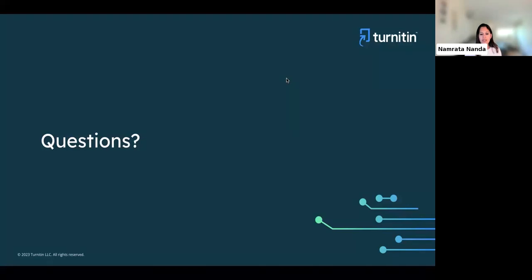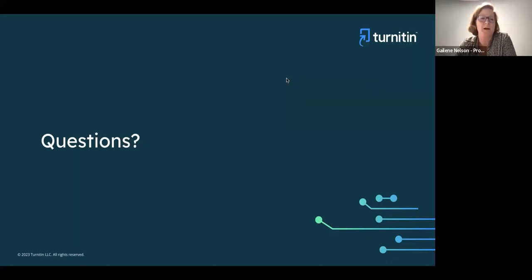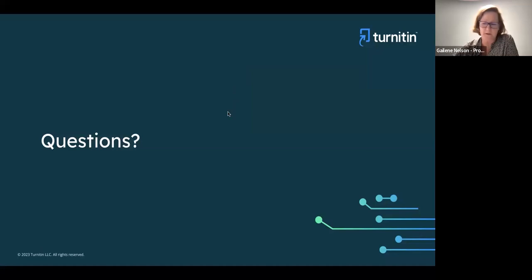Question for Gaylene: can you clarify that for those who opted out of AI detection, will their papers and student submissions still run through the AI detection service? Yes — as of April 4th, we just don't show the AI indicator when you disable that feature. But we are still processing papers as of the 4th, so that when you do turn it on or enable it for a test account, you'll be able to see that data when it shows up.